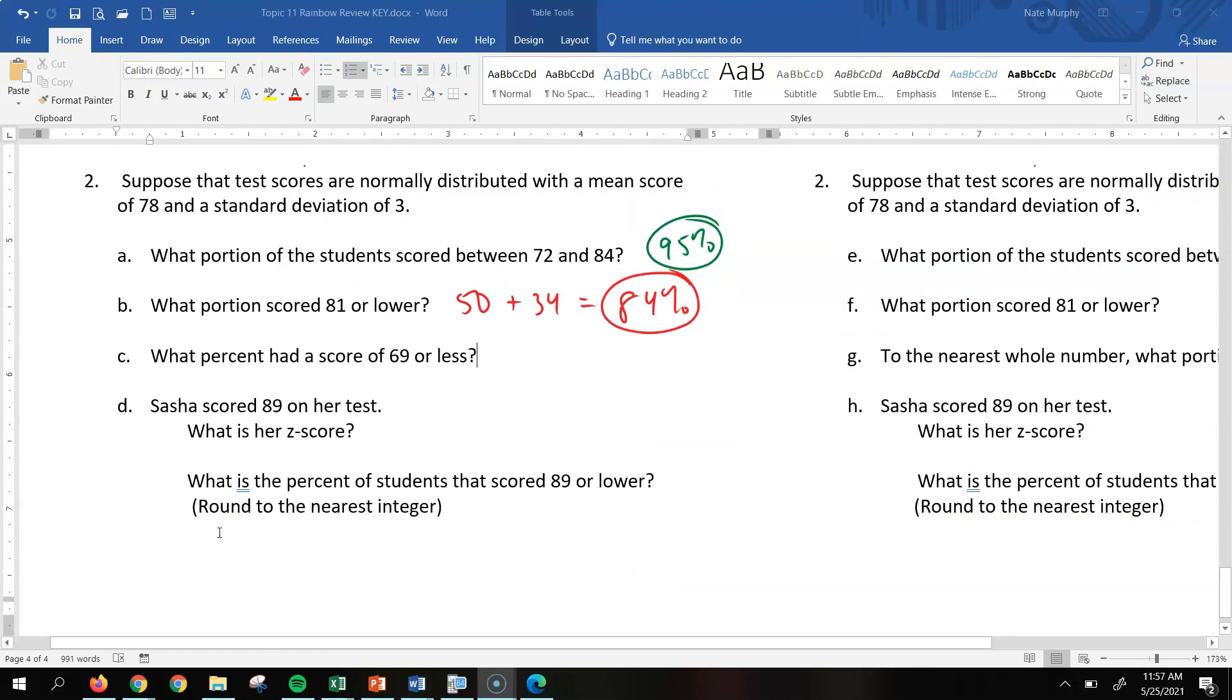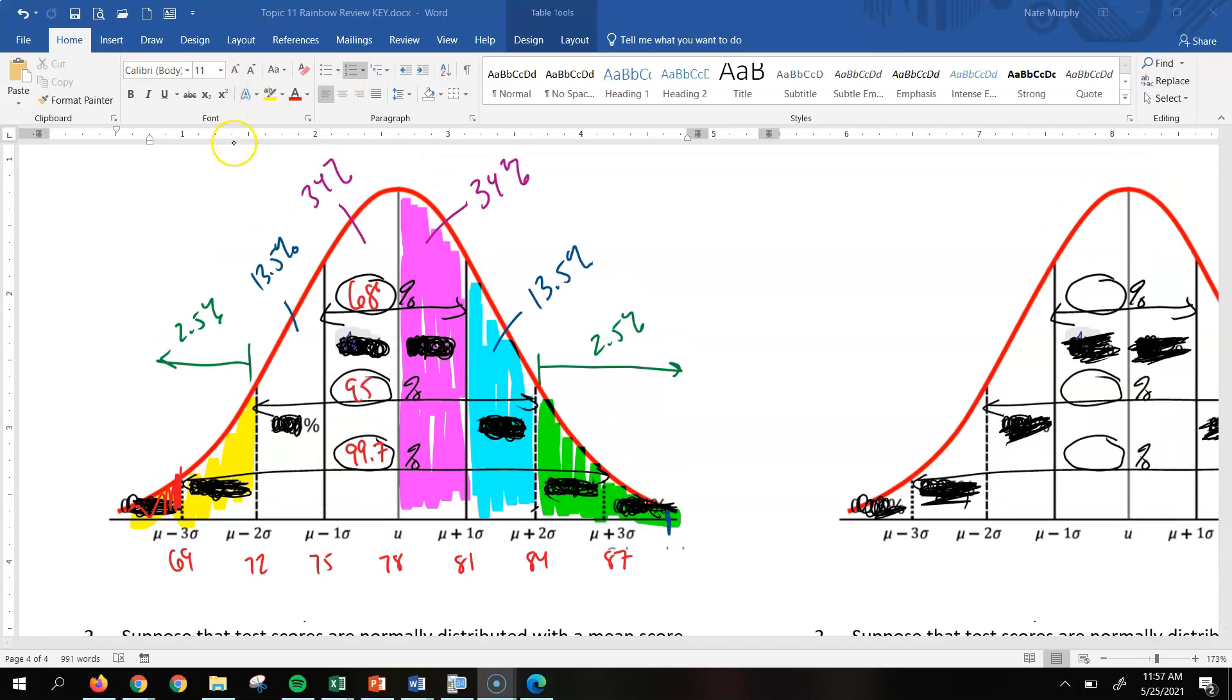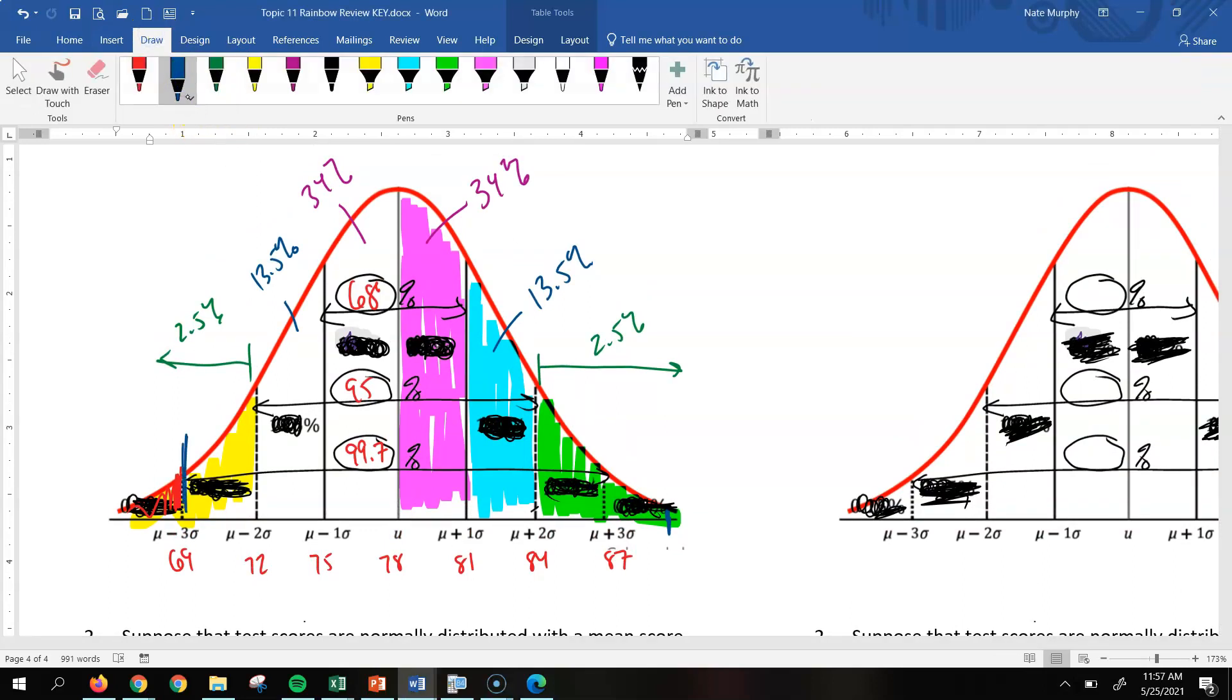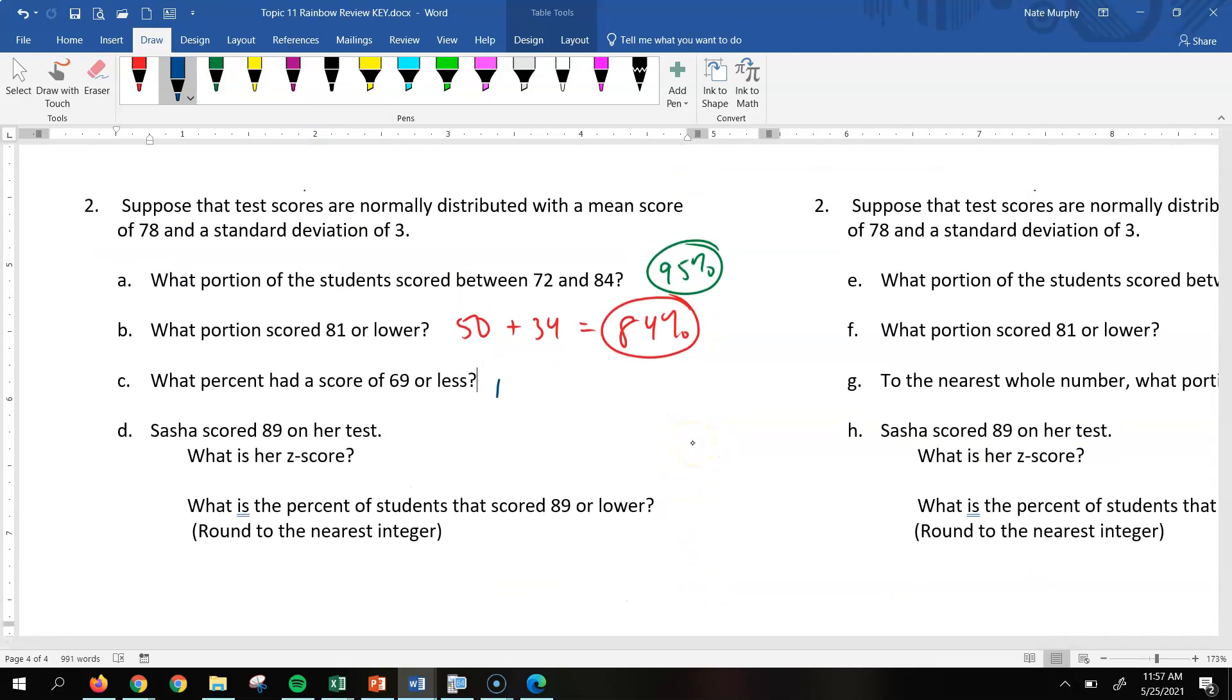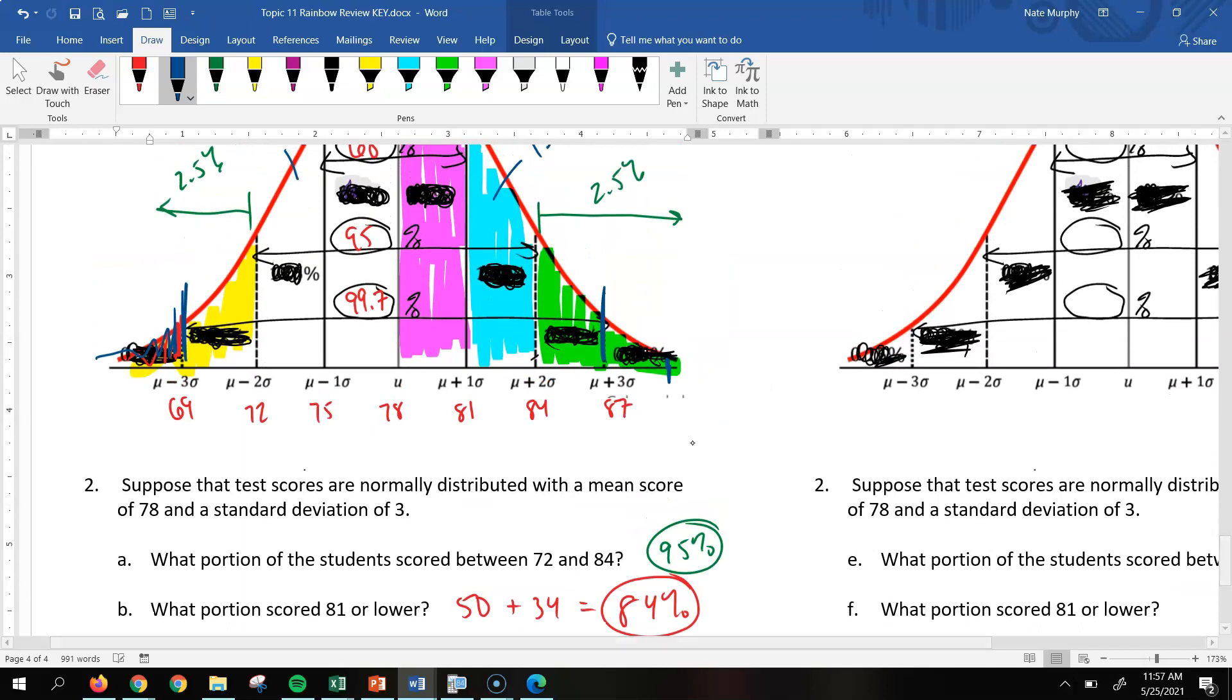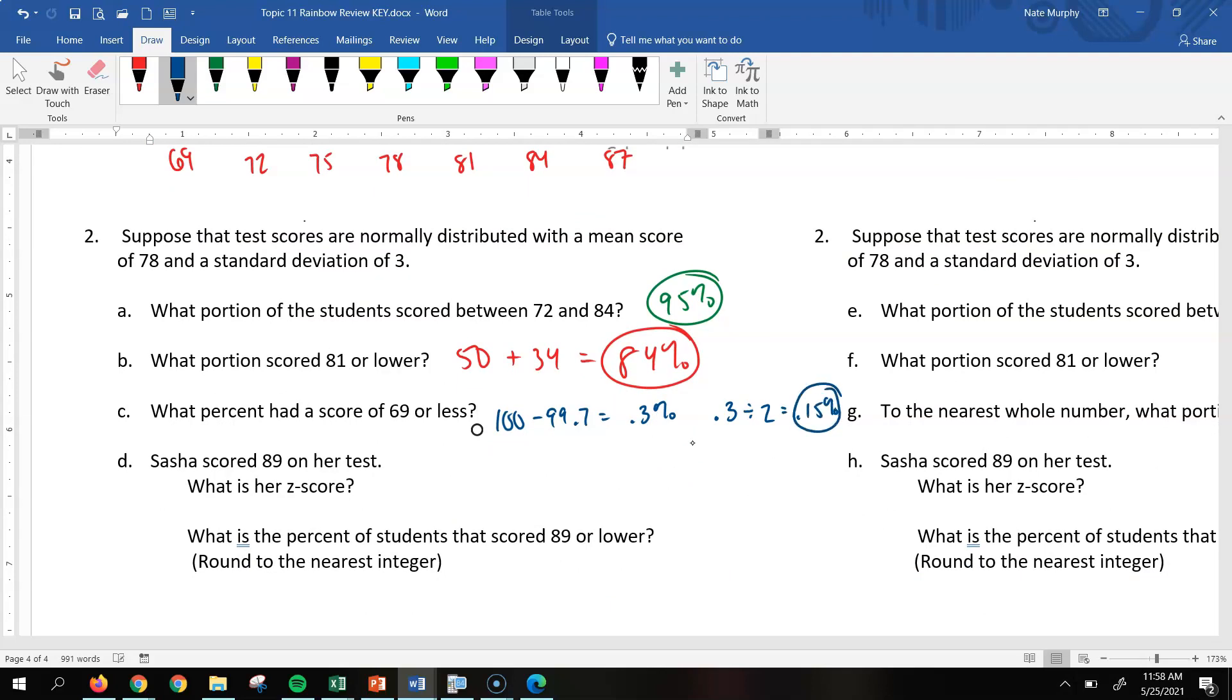All right, so for letter C, we're going to look at what percent of students had a score of 69 or less. And so if you look back up here at your normal curve, remember 99.7% of your data is between three standard deviations above and below your mean. And so we want to figure out what percent of students fell in this category down here. So that's outside of 99.7% of the data. So the easiest way to approach this would be if you took 100 minus 99.7, we get 0.3. Now that's 0.3%, okay? So we don't have to change that to a percent. That's already as a percent. And then what we're going to do is we're going to take that 0.3 and divide that in half. And the reason why we're going to divide that in half is because that 0.3 represents both of these sections. We just want one of them. So we would take 0.3 divided by 2, and that would give you 0.15%. So that's why you get part C.